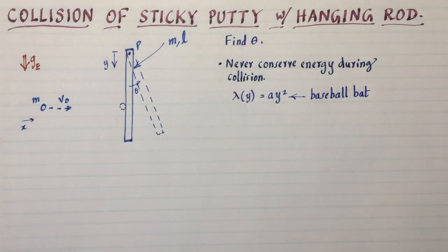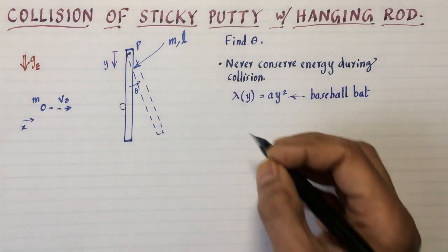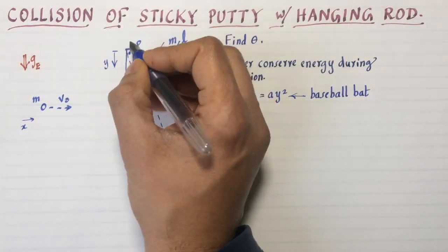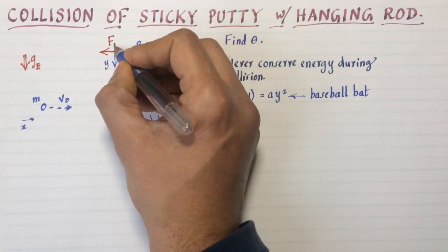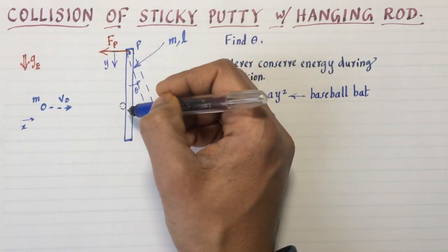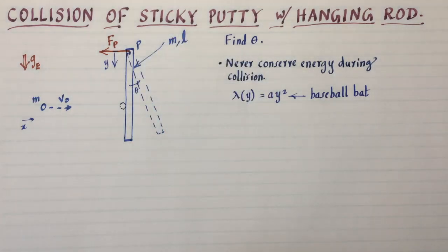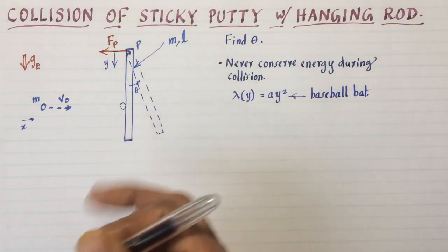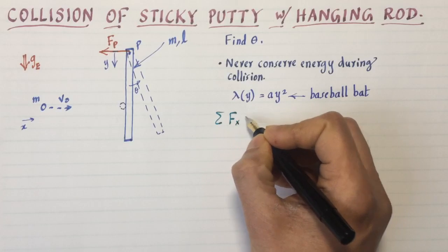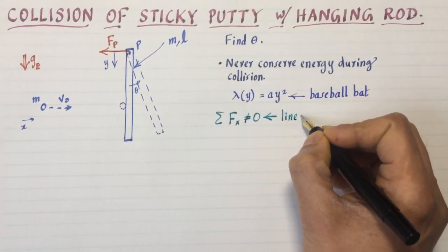If you cannot use energy, what can we use? We have three principles: energy, linear momentum, and angular momentum. Can linear momentum be used? Unfortunately no, because the moment the putty collides with the rod, there's going to be a reaction force at the pivot communicated through the speed of sound through the solid material. So sum of forces in the x direction is not zero, so linear momentum cannot be conserved.